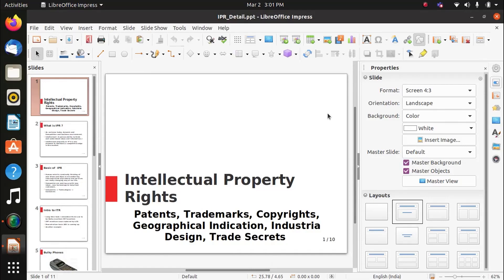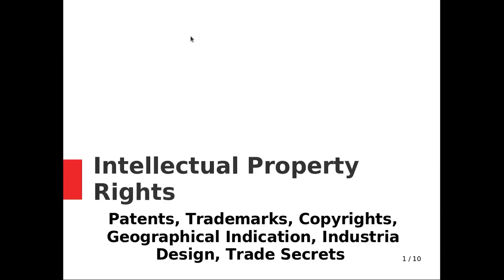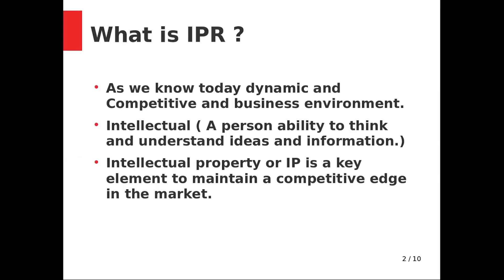Hello students, today we are going to see a new topic of cybersecurity module 2 — that is Intellectual Property Rights. This topic is very important and will be helpful for you in the future. Let us begin with the topic: intellectual property rights include patent, trademark, copyright, geographical indication, industrial design, and trade secrets.